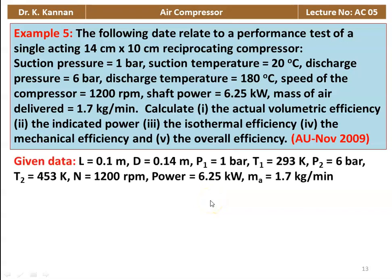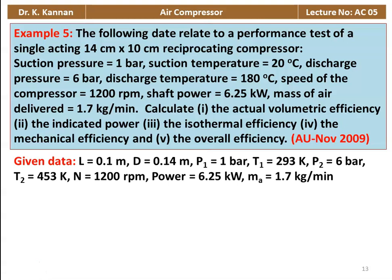Given data: stroke length = 0.1 m, diameter = 0.14 m, P1 = 1 bar, T1 = 293 K, P2 = 6 bar, T2 = 453 K, speed = 1200 RPM, shaft power = 6.25 kW, mass of air delivered = 1.7 kg/min.